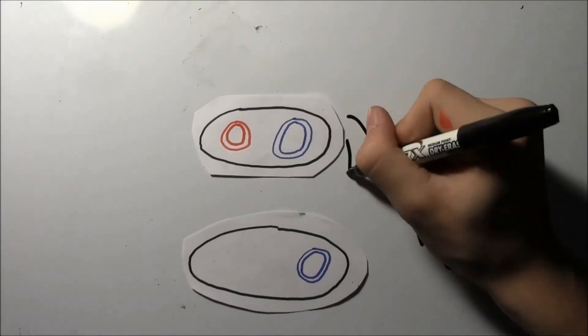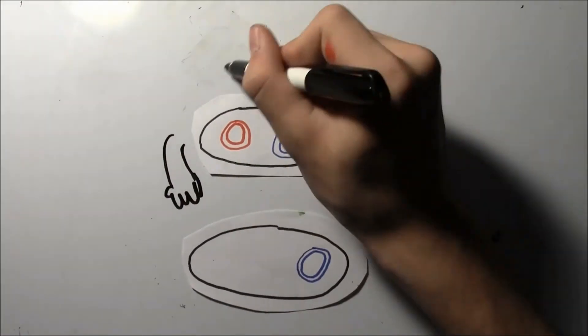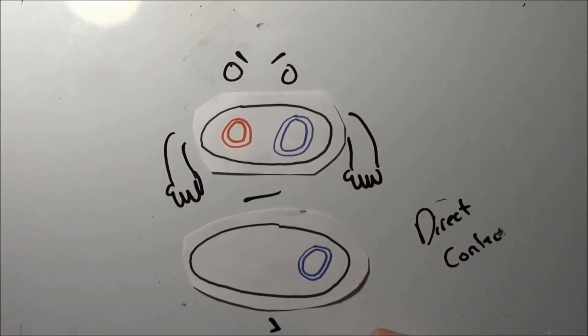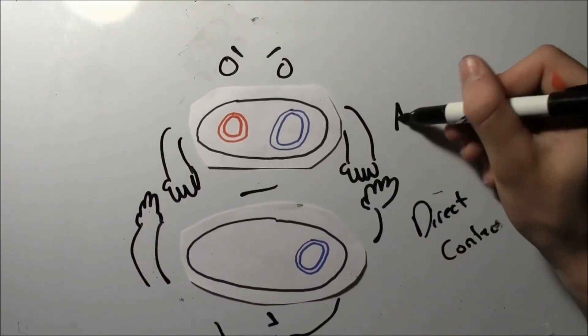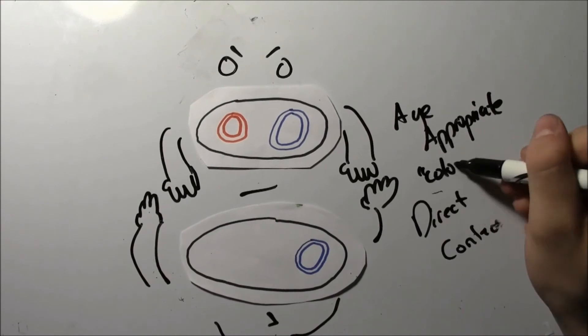Today we'll be talking about bacterial conjugation, which is very unique in the ways of prokaryotic DNA transfer as it requires direct contact between two bacterial cells. Conjugation is a bacterial equivalent of sexual reproduction in eukaryotic organisms.